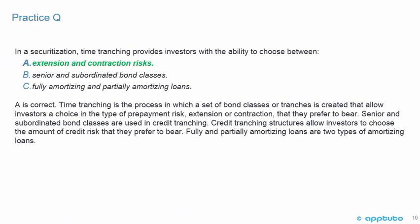The correct answer is A. Time-tranching provides investors with the ability to choose between extension and contraction risks. Tranching is the process in which a set of bond classes, or tranches, is created that allows investors a choice in the type of prepayment risk — extension or contraction — that they prefer to bear. Senior and subordinated bond classes are used in credit-tranching, which allows investors to choose the amount of credit risk they prefer to bear. Fully and partially amortizing loans are two types of amortizing loans.